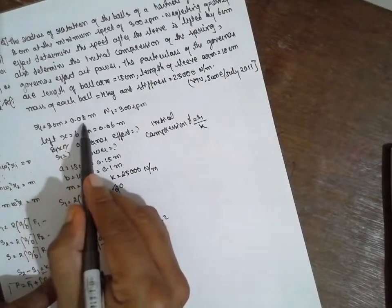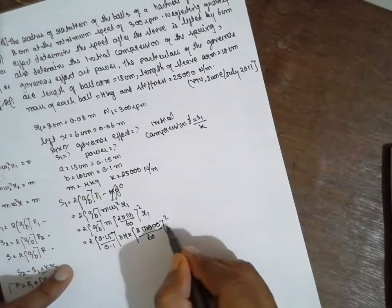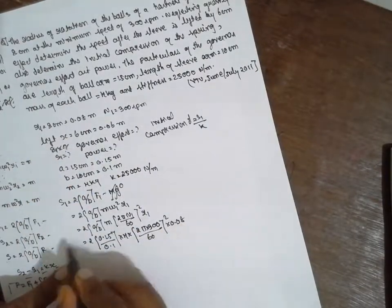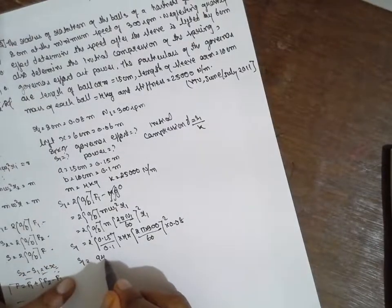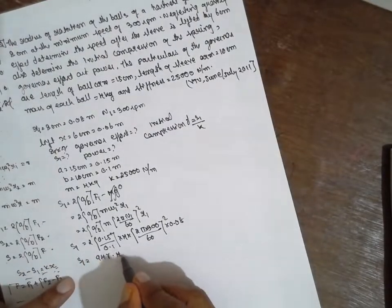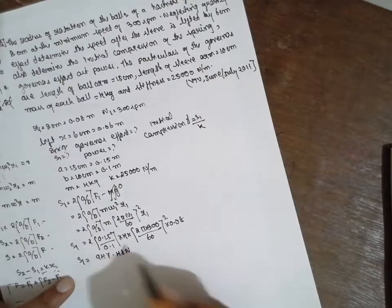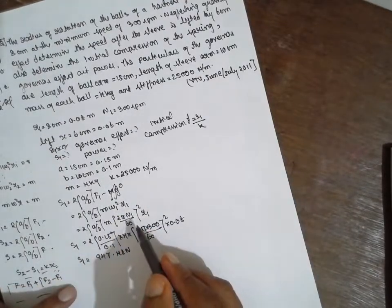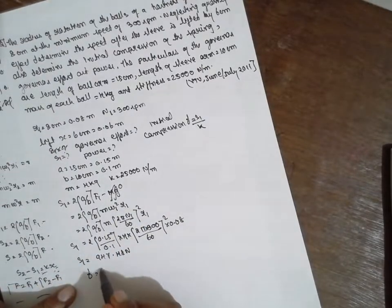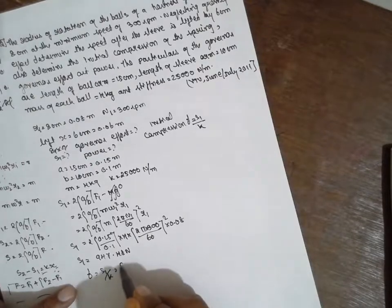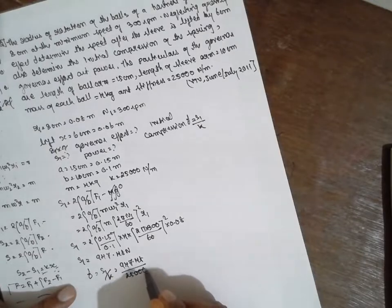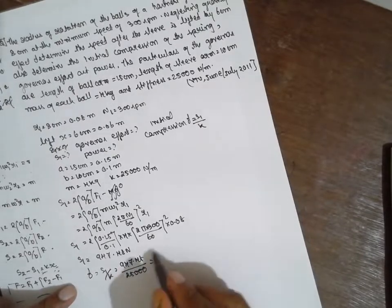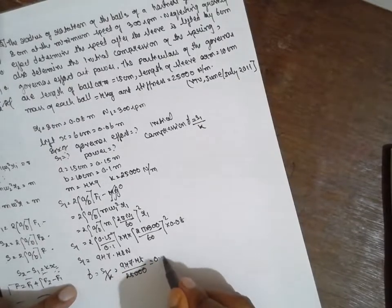With R1 equal to 0.08 meter, substituting the values gives S1 equal to 947.48 N. The stiffness is already given, so delta equals S1 divided by K: 947.48 divided by 25,000 gives delta equal to 0.037 meter.